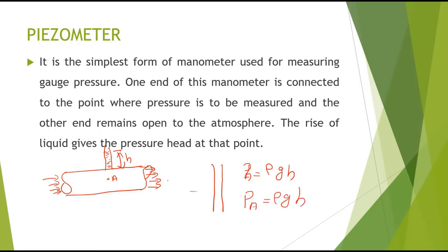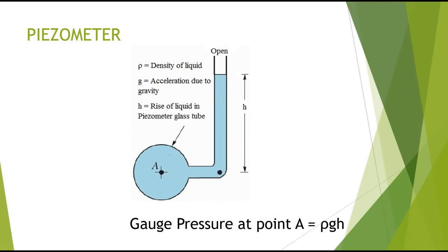Here ρ is the density of the fluid in the pipe and h is the rise of liquid in the piezometer tube. In the cross-sectional view, the piezometer is attached to the pipe; the fluid level rises to height h above point A, and the gauge pressure at A equals ρgh.